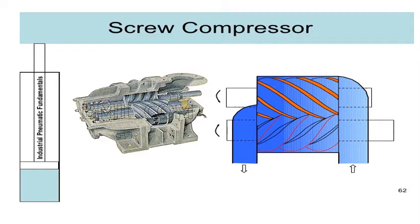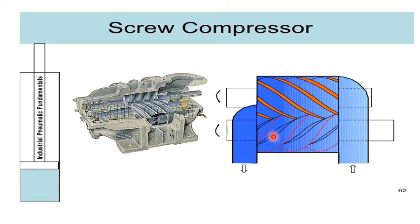Next is the screw compressor. Its diagrammatic representation shows two helically grooved rotors. The male rotor has lobes and the female rotor has gullies.